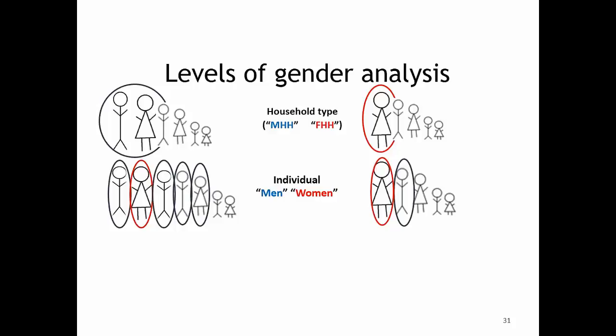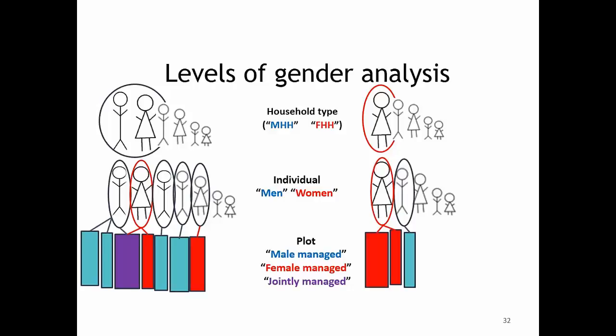You can also do plot-level analysis. Some plots could be male-managed, some female-managed, and some jointly-managed — represented as blue, red, and purple respectively. You could do analysis at the plot level, looking at what kind of technology is being used, how productive they are, and what their returns are.